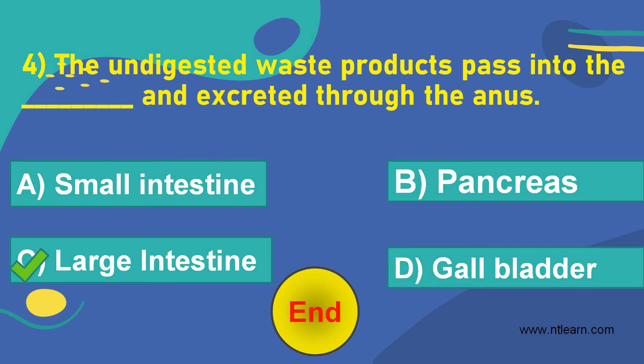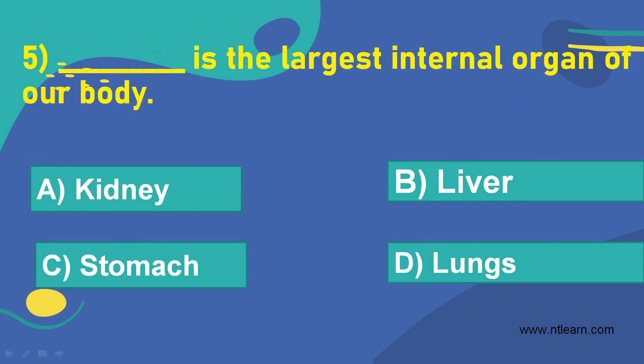Let's move on to the next question. Dash is the largest internal organ of our body. Option A, kidney. Option B, liver. Option C, stomach. Option D, lungs.